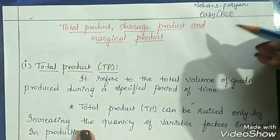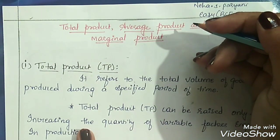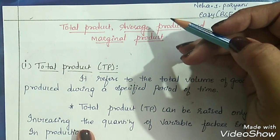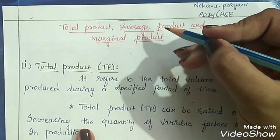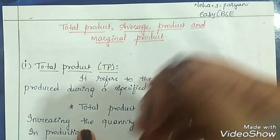Total product, average product, and marginal product. This is another concept from the production and cost chapter of microeconomics.